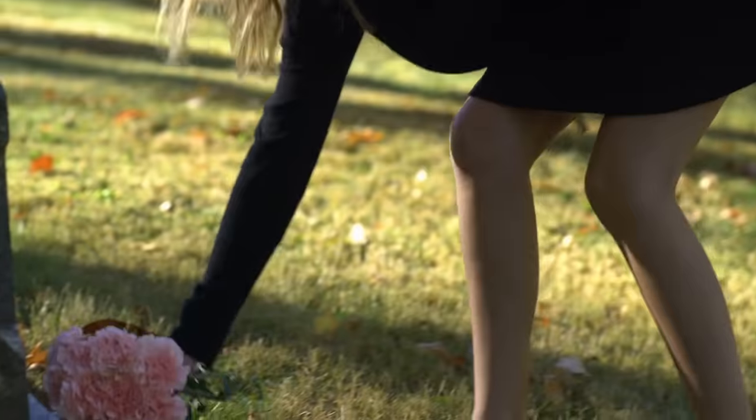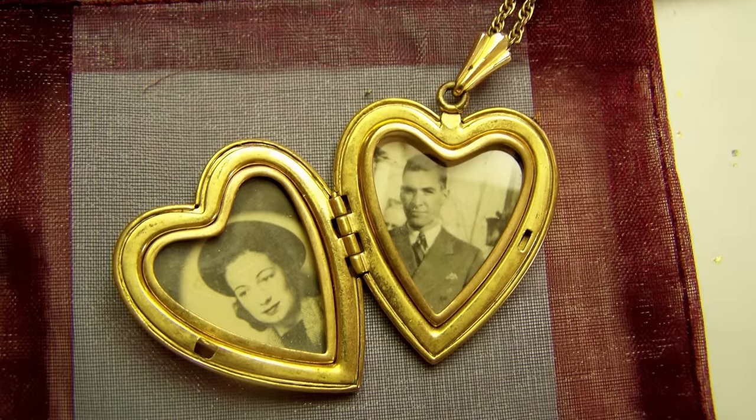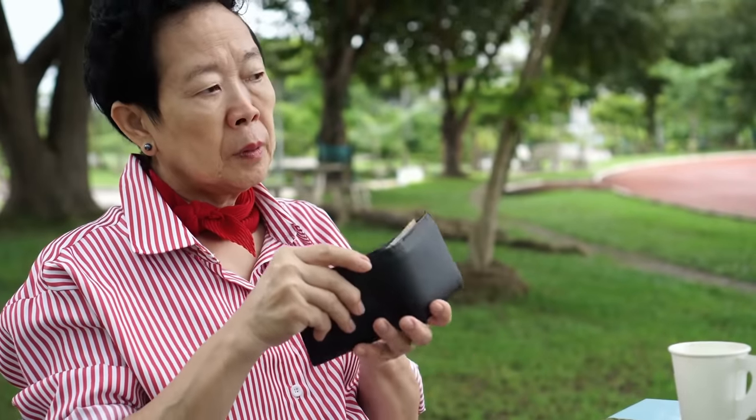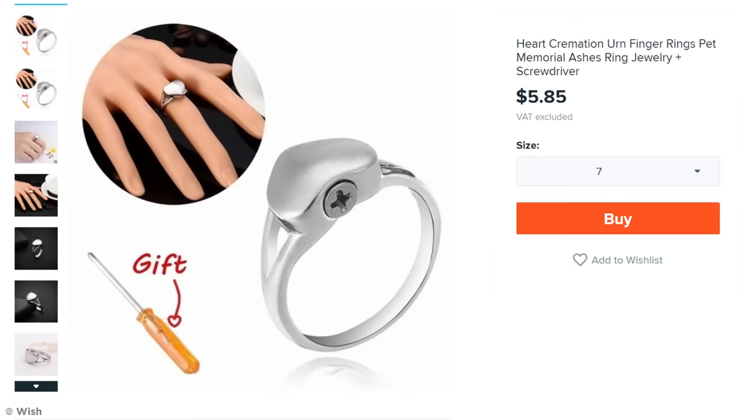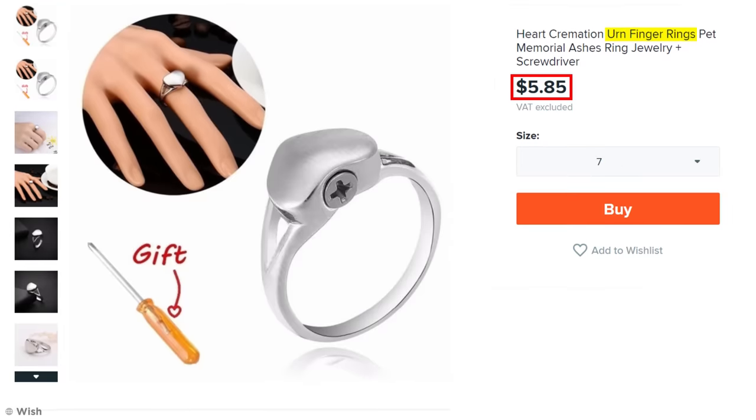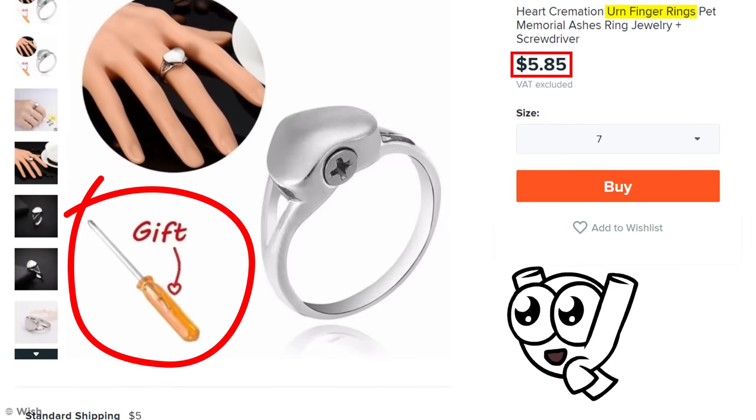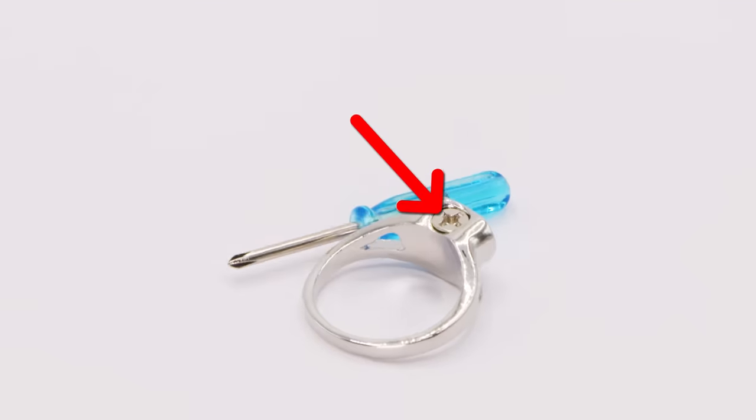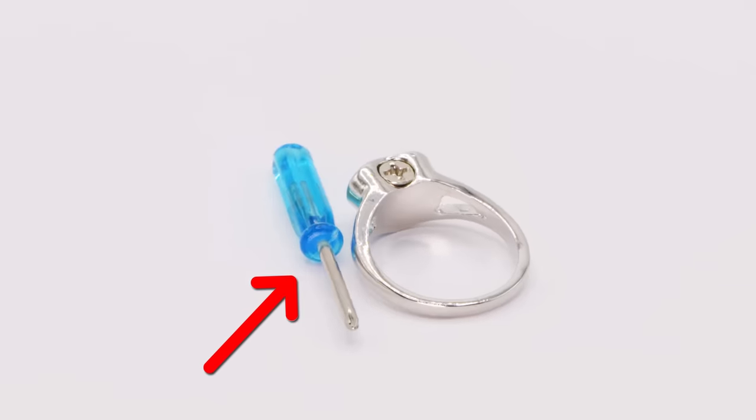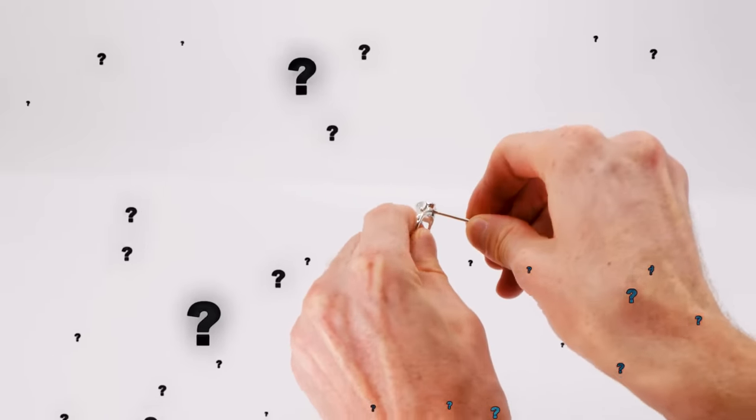Unusual Urn Ring. When someone you love passes away, you want something special to remember them by. Some people wear a locket with something of theirs inside it. Others put a photo of them in their wallet. But people who shop on Wish are presented with this arguably more disturbing option: an Urn Ring for just five dollars and eighty-five cents. It's a little odd, but it comes with a free gift of a miniature screwdriver. So how could I resist? It arrived looking like any other stainless steel ring, just with a massive screw in the top of it, along with the promised screwdriver. Giant screw aside, this one honestly doesn't look all that bad.